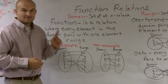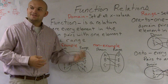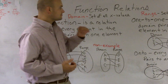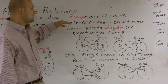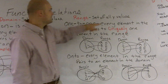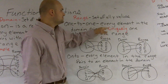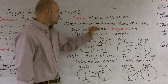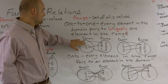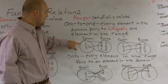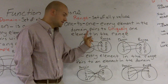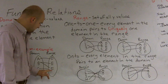Now there are two types of functions we like to deal with: onto and one-to-one. For a one-to-one function, every element in the domain pairs to uniquely one element in the range. If you look here, everything in the domain goes to exactly one element in the range — it goes to uniquely one.